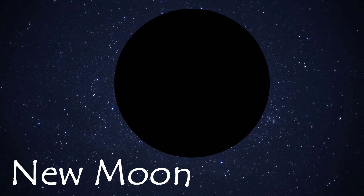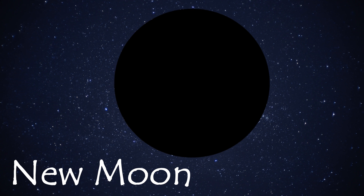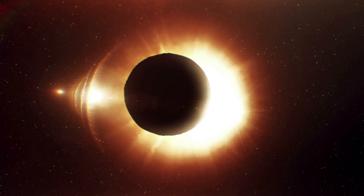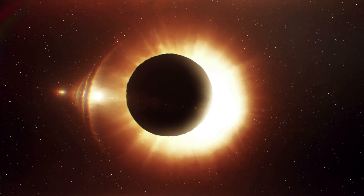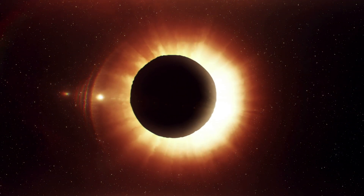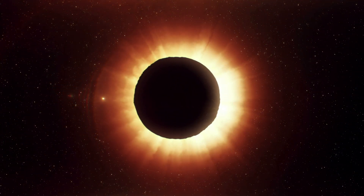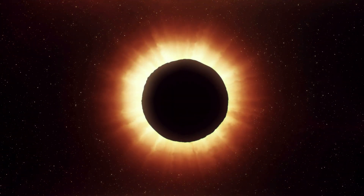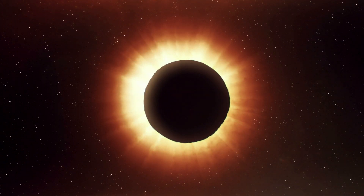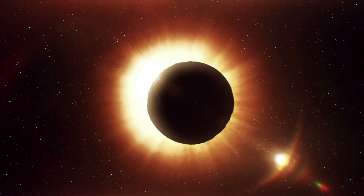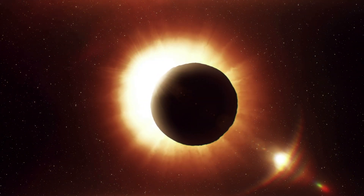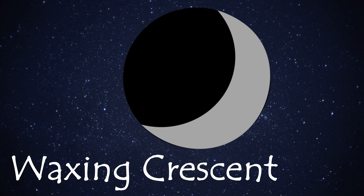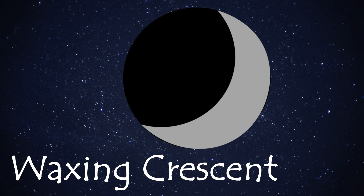The lunar cycle begins with the new moon, when the moon appears completely dark. This is because the unlit side of the moon is completely facing the Earth. Solar eclipses can only happen during the new moon phase because it is the only time that the moon is between the sun and the Earth.